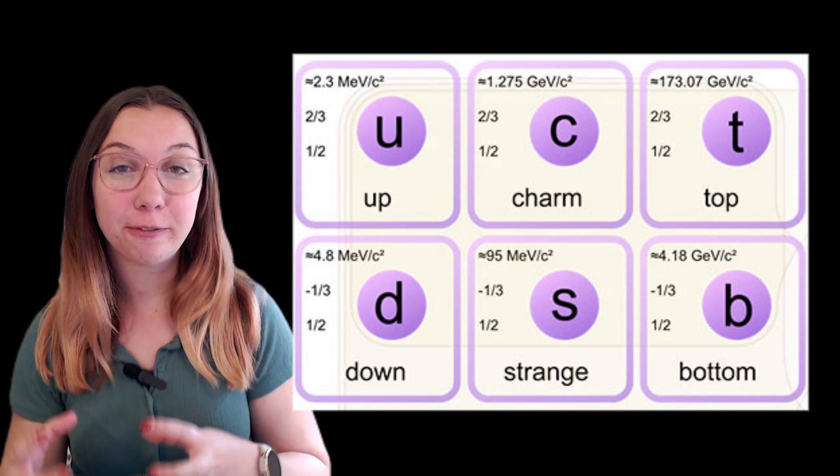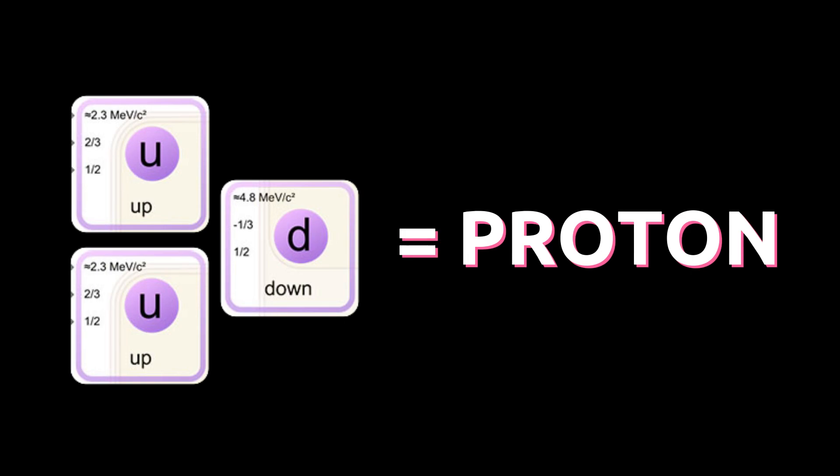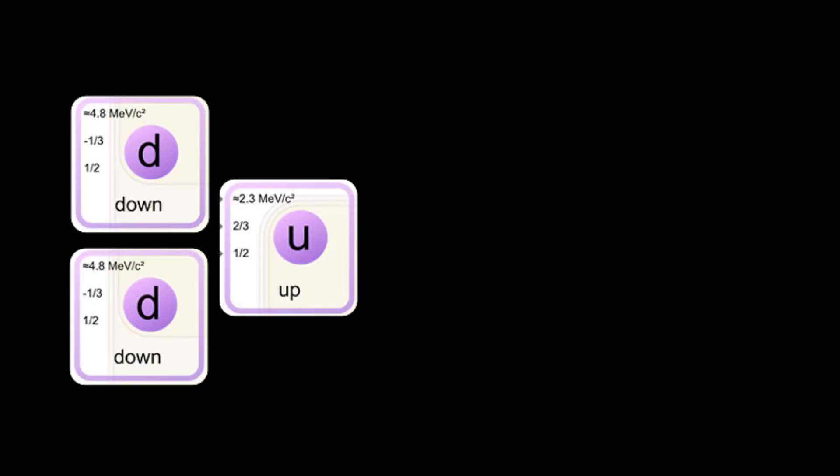And when you combine them in different groups they make up other particles. For example two up quarks and a down quark make a proton and two down quarks and an up quark make a neutron.